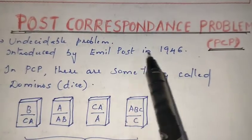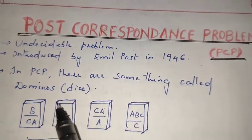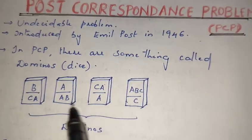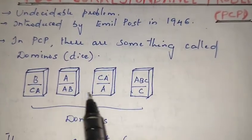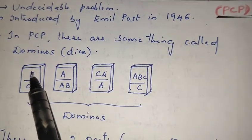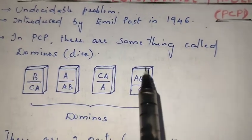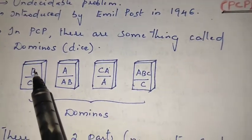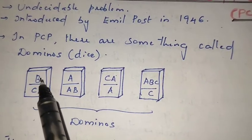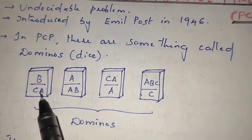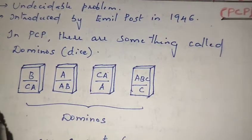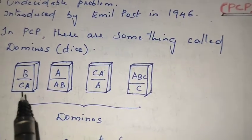This problem was introduced by Emil Post — that's why it is named the Post Correspondence Problem — in 1946. We are given some dice, which are called dominoes. Each domino has two parts: a numerator and a denominator, that is a top part and a bottom part.